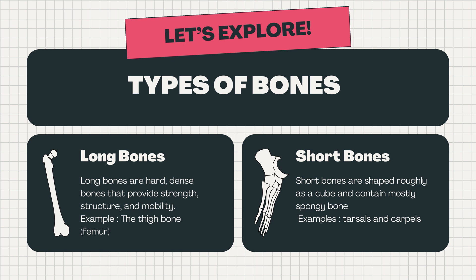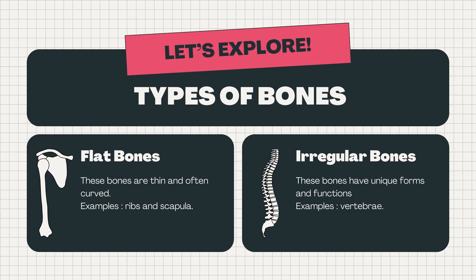An example of a long bone is the thigh bone, or femur. Short bones are shaped roughly as a cube and contain mostly spongy bone — examples include tarsals and carpals. Flat bones are thin and often curved — examples include the ribs and scapula. Irregular bones have unique forms and functions — examples include the vertebrae.